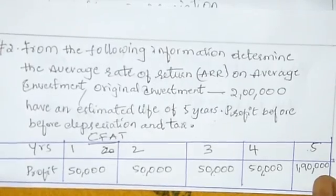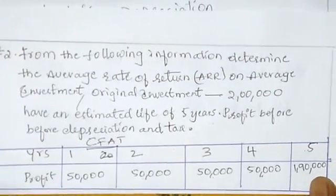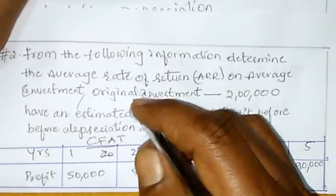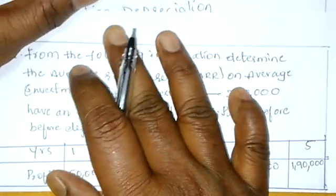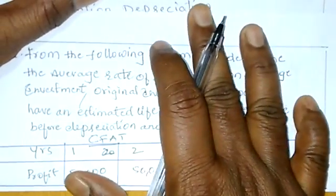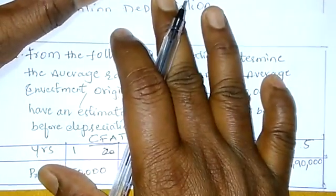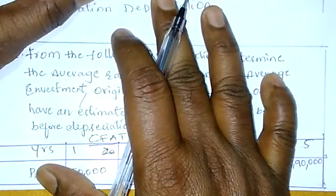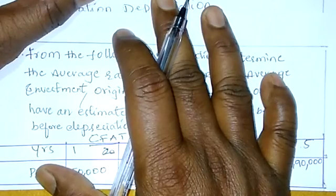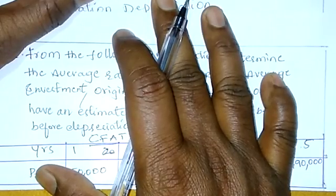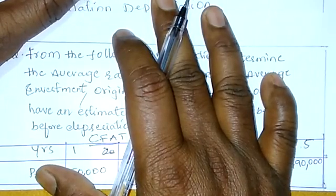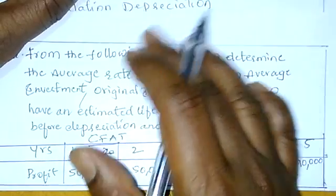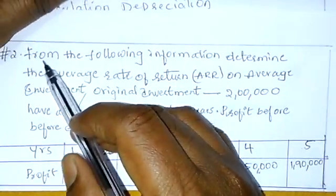Hi everyone. Eeroju Manamu average rate of return problem discuss jayadam jarukthundi. Previous video lho Manamu average rate of return discuss jayasamu. Ippidu Maruka problem discuss jayasamu — important problem. Kasari Choozdam problem.